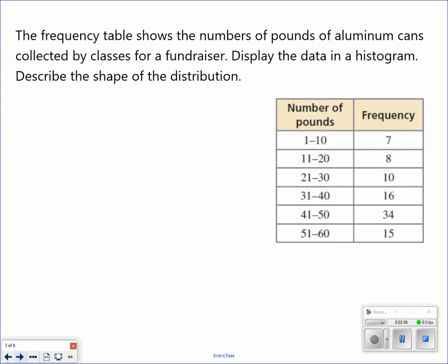The frequency table shows the number of pounds of aluminum collected by the class of Fundraiser. Display the data as a histogram and then describe the shape. I'm going to make a giant L here. It's already giving me the first range.